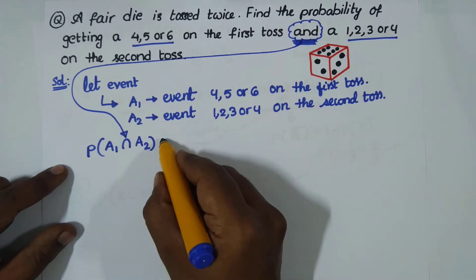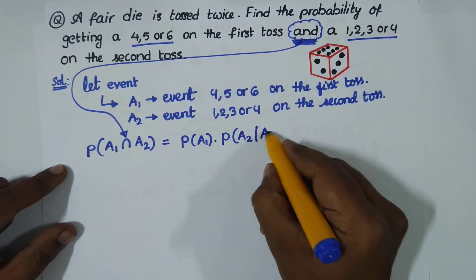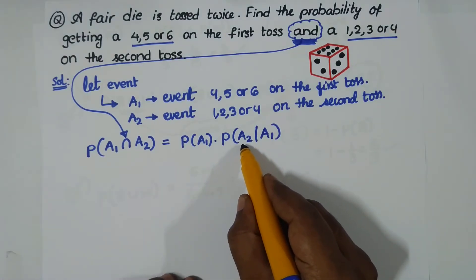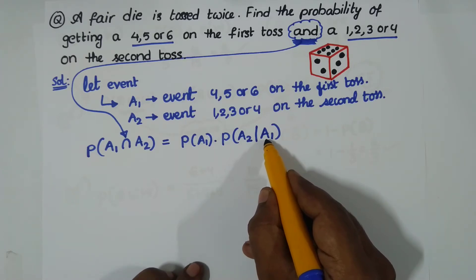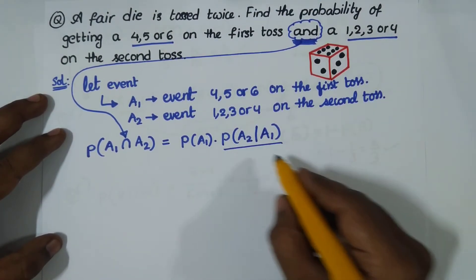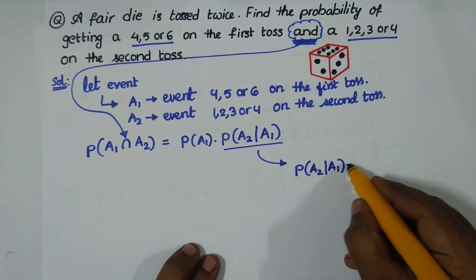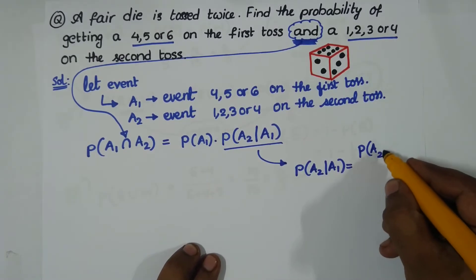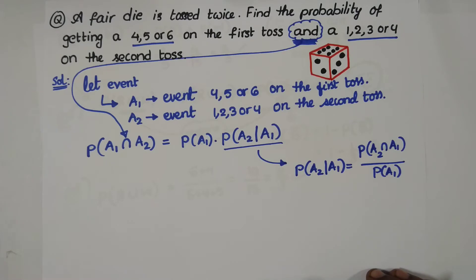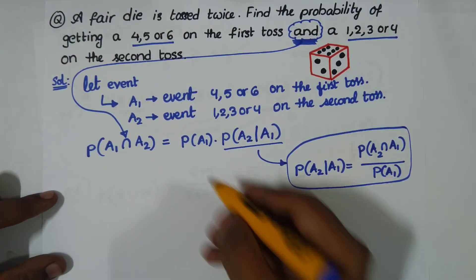We can write P(A1 ∩ A2) = P(A1) multiplied by P(A2 | A1). This is conditional probability — the probability of occurrence of event A2 given event A1 has already occurred. We know that P(A2 | A1) = P(A2 ∩ A1) divided by P(A1).